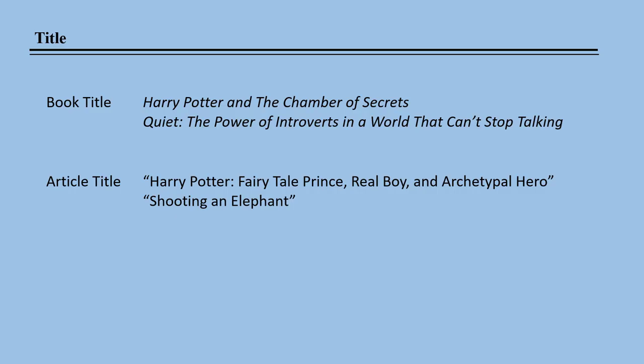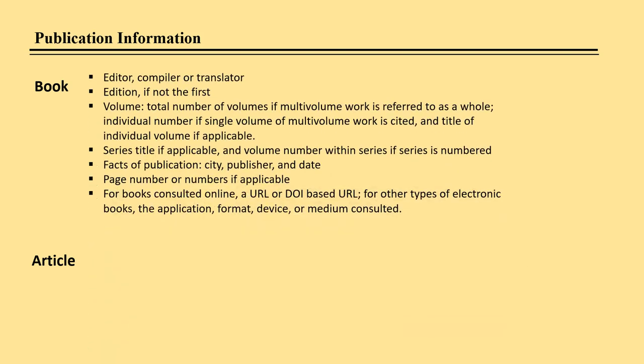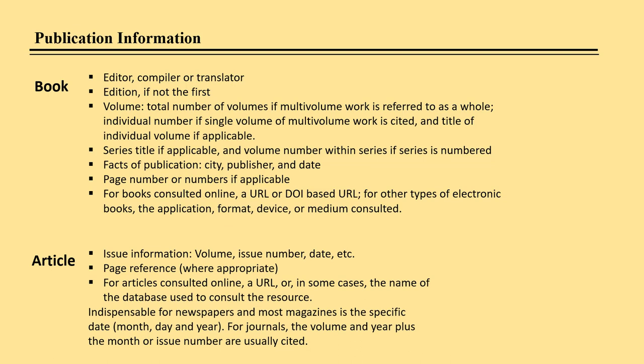Titles are treated the same in the footnote and bibliography. Book titles are italicized, while article titles are not italicized but are encased in quotation marks. Subtitles are preceded by a colon. All major words of the title and subtitle are capitalized. Publication information can vary widely depending upon the item cited; that is why we provide many examples and handouts. The publication information for a book can include editors and translators, volume number, city of publication, publisher's name, and a URL or DOI if electronic. Publication information for an article will always include a date of publication, usually including a month as well as a year, and possibly a day as well.